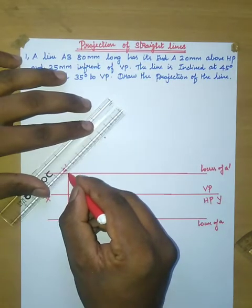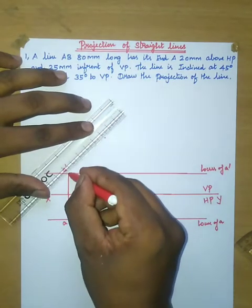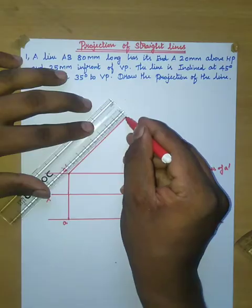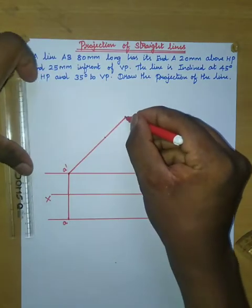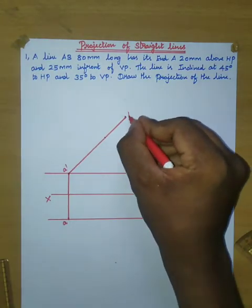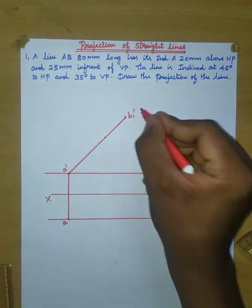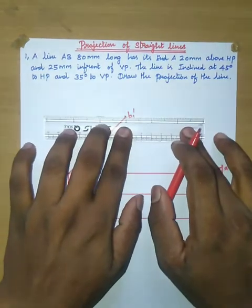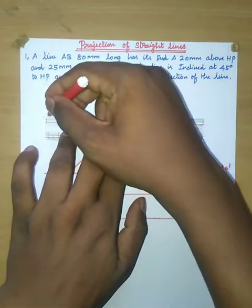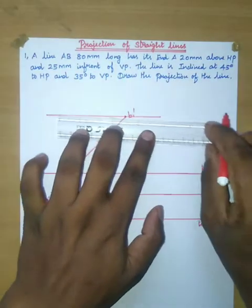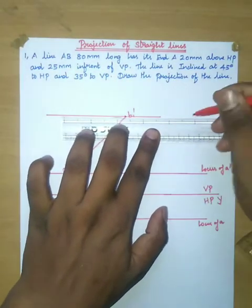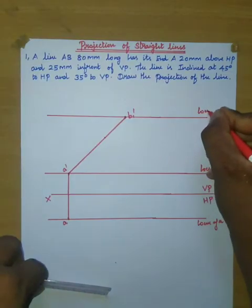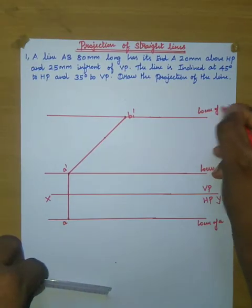Draw a line at 45 degrees from point A'. Mark this point as B1'. Then draw a horizontal line at that point and name this line as the locus of B'.